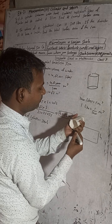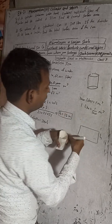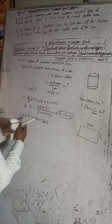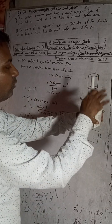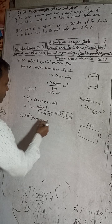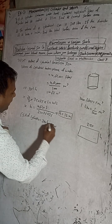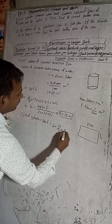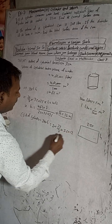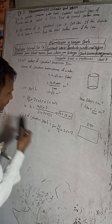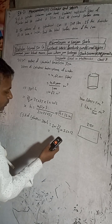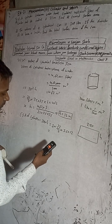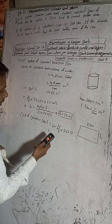So the curved surface area = 2πrh. This outer surface, if you cover it, is the curved surface area. Substituting: 2 × (22/7) × 3.5 × 12. Calculate: 22 × 2 × 3.5 × 12 ÷ 7.